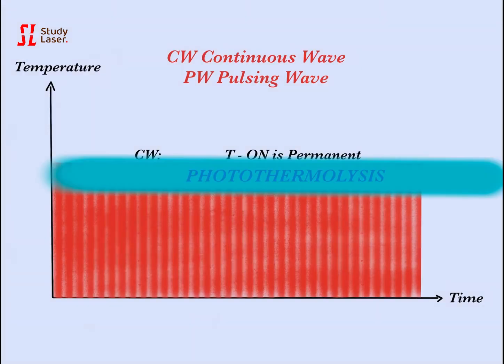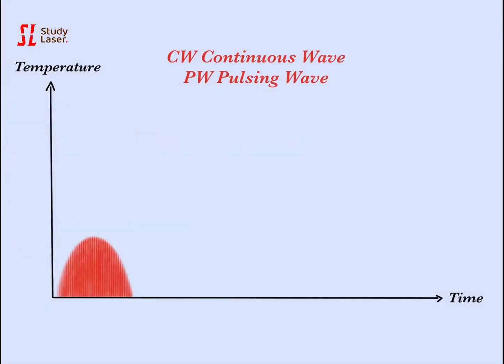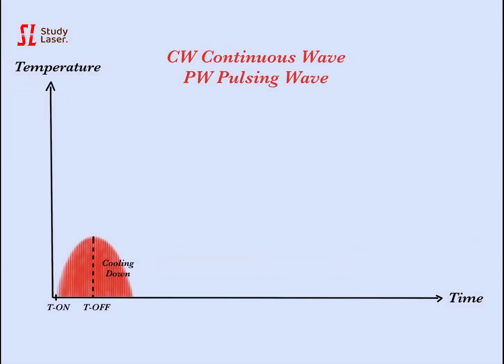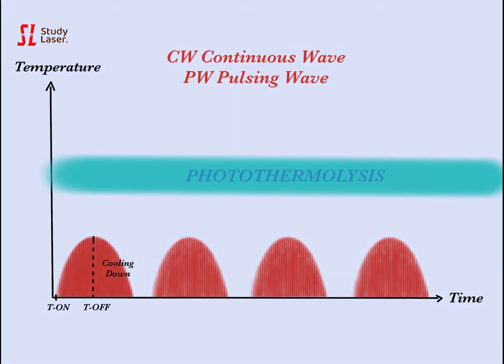The temperature of the tissues reaches the level of photothermolysis very quickly in continuous wave mode. In pulsing mode, the T-on and T-off are time limited. The temperature of the tissues rises during T-on and cools down during T-off. The cooling down period depends on the size of the cells or structure — it is slower with larger structures. When the temperature does not reach the level of photothermolysis, there is no effect on the cells.